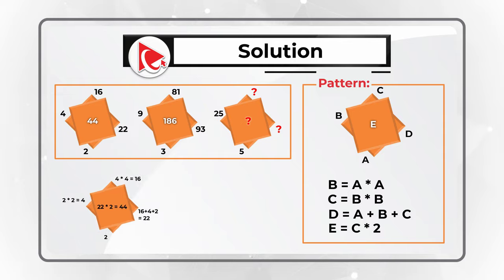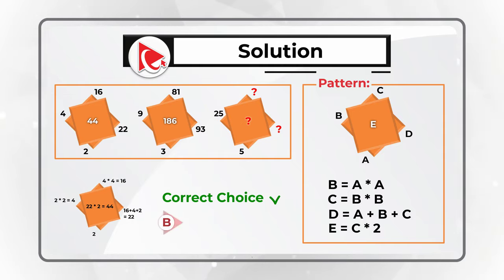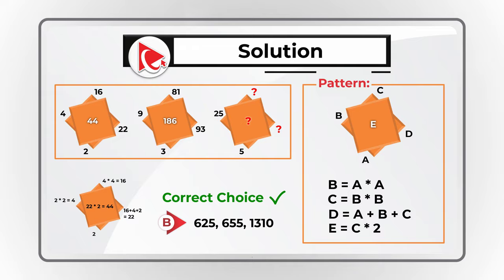If you follow this logic and do the calculation, you will arrive at choice B, represented by the numbers 625, 655, and 1310. Hopefully you've nailed this question and now know how to answer similar problems on the test.